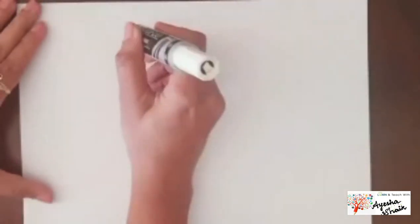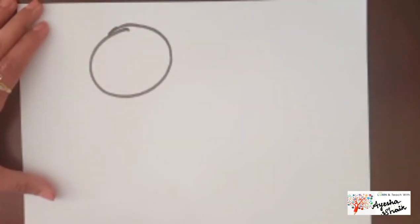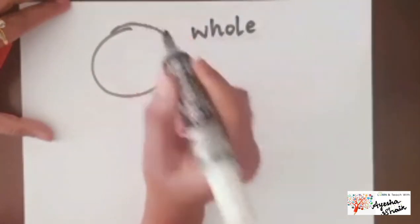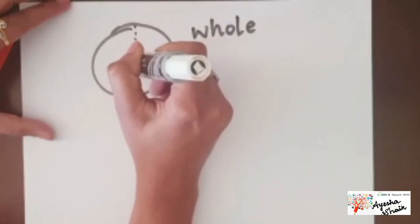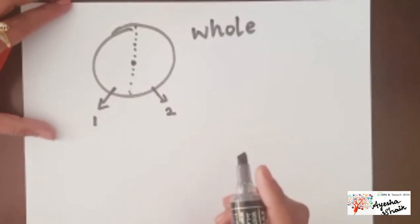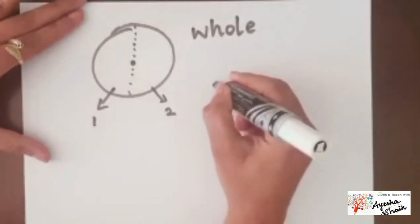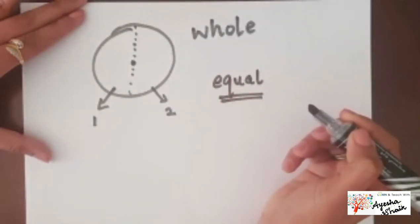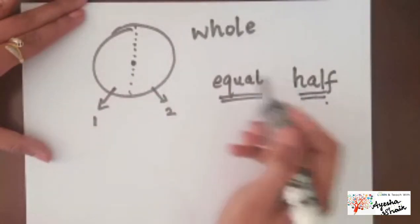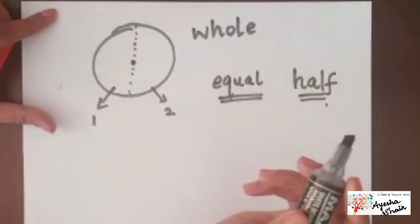Before we learn about quarter past and quarter to, there's a quick activity. What is this shape? It's a circle — a whole circle. Now if I draw a line from the center, there are two parts — a first part and a second part. When a circle is divided into two equal parts, the key vocabulary word is 'half'. So two equal parts is called half — this is one half and this is the other half.